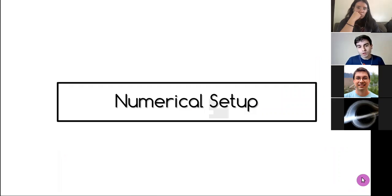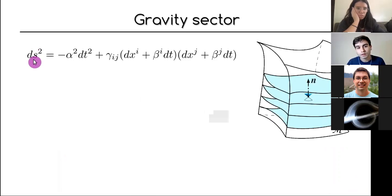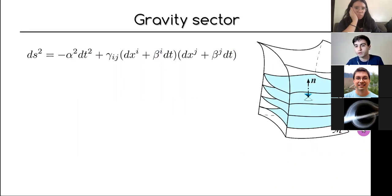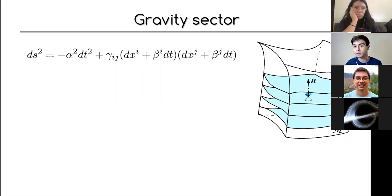For the numerical setup, we are using numerical relativity — basically solving Einstein's equations on a computer. The standard approach is the 3+1 decomposition, where you take the spacetime and decompose it into three-dimensional hypersurfaces evolved in time. This means we specify initial data that satisfies some constraints, and then evolve it using evolution equations.